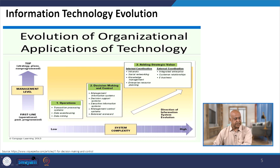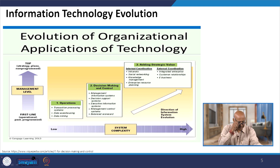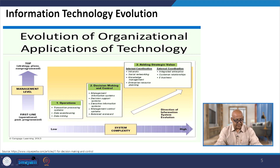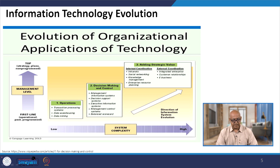In the evolution of organizational applications of technology, we find strategic plans and non-programmed decisions at the higher management level, while at the operational level there are programmed decisions and transaction processing systems. The TPS system includes data warehousing and data mining, on the basis of which operational systems are decided.